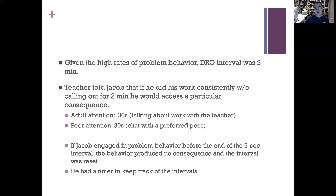The teacher told Jacob that if he did his work consistently without calling out for two minutes, he would have access to a particular consequence. They had two conditions: in the adult attention condition, every two minutes without problem behavior, Jacob could talk to the teacher for about 30 seconds. In the peer attention condition, if Jacob did not engage in problem behavior for the full two minutes, he had access to a preferred peer and could talk to the peer for about 30 seconds.